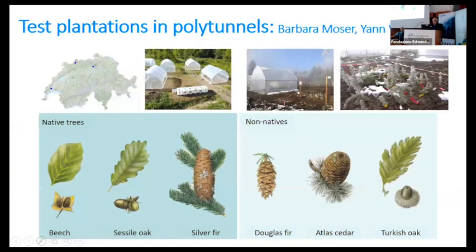In the polytunnel project — located at three of the 60 sites — we test beech, sessile oak, silver fir, Douglas fir, Atlas cedar, and Turkish oak. These polytunnels are about five meters tall and four by six meters in area. We try to produce a climate that is two to four degrees on average higher than ambient.